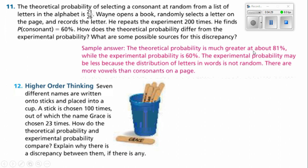The theoretical probability is much greater at about 81%, while the experimental probability was 60%. Remember, 21 divided by 26 will give you about 81%. We only got 60%. The experimental probability may be less, because the distribution of letters and words is not random. There are more vowels than consonants on a page. Remember, every word needs vowels in it, but every word does not necessarily have all the consonants in it. So, in this particular case, we're saying that vowels are going to be picked more than the percentage that we thought.